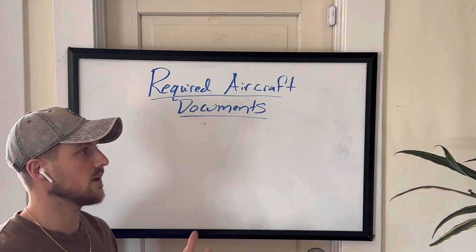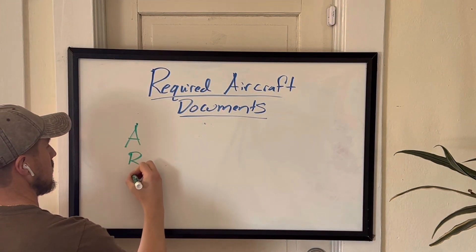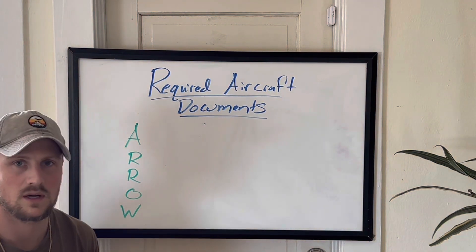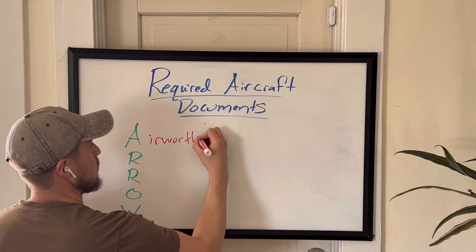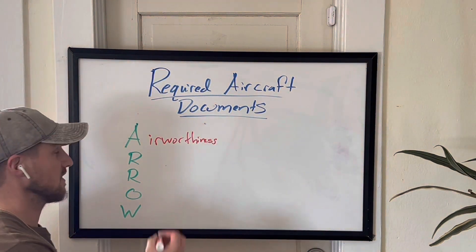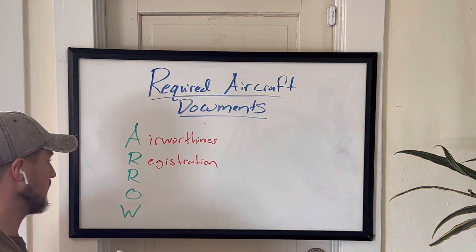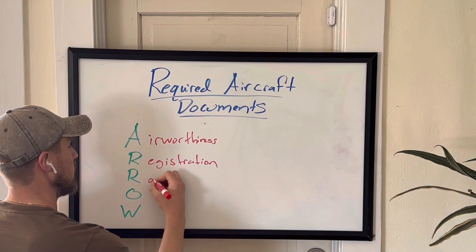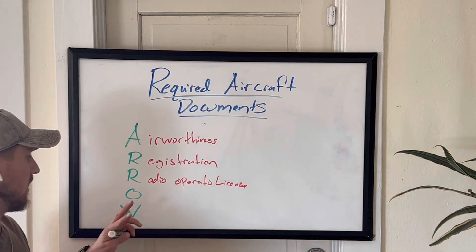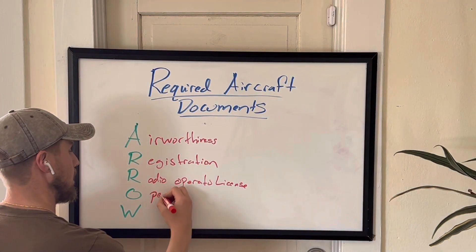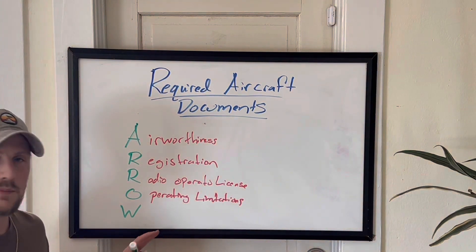So what is the common mnemonic device that we use to remember this? That's ARROW — A, R, R, O, W. So what do these all stand for? The A stands for the airworthiness document. The first R stands for the registration. The second R, which we'll get into, is probably not required for you, but it's radio operator license. And then O is going to be your operating limitations. W is going to be the weight and balance.